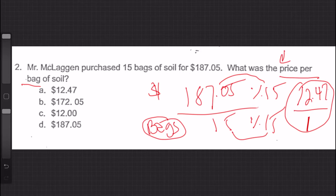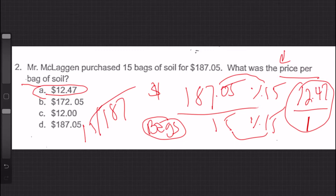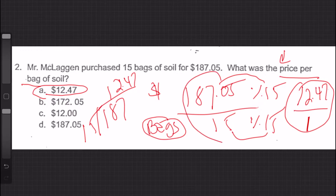The question asks: what was the price per bag of soil? The answer is letter A — $12.47 per bag of soil. You could have also just divided 187.05 by 15 and gotten the same answer, $12.47. Either way this works, but doing it the ratio way is the method we're using here.